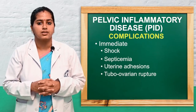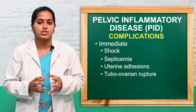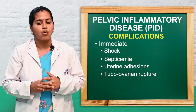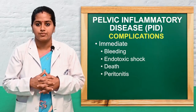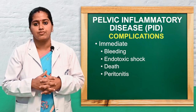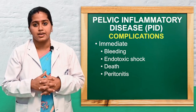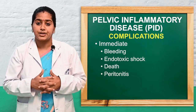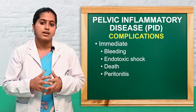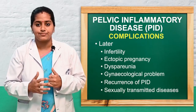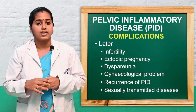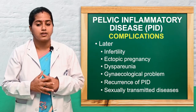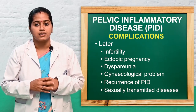Complications include immediate complications such as shock, septicemia, uterine adhesions, tubo-ovarian rupture, bleeding, endotoxic shock, women's death, and peritonitis. Later complications include infertility, ectopic pregnancy, dyspareunia, other gynecological problems, recurrence of PID, and sexually transmitted diseases.